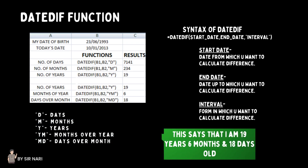The DateDiff function uses: Start Date — the date from which you want to calculate the difference; End Date — the date up to which you want to calculate the difference; and Interval — the form in which you want to calculate the difference: D for days, M for months, Y for years, YM for months over year, and MD for days over month.